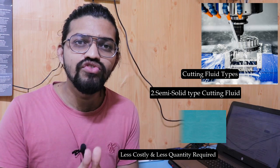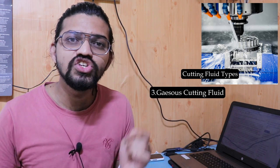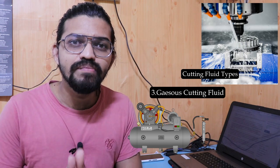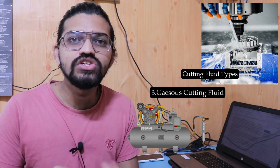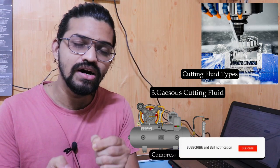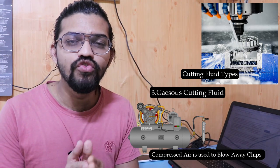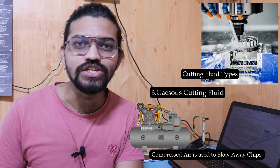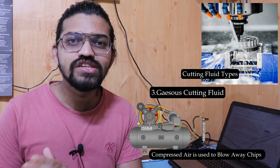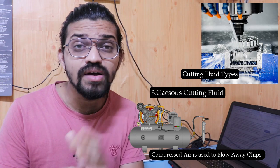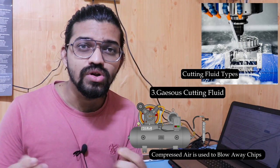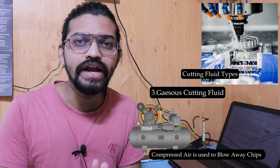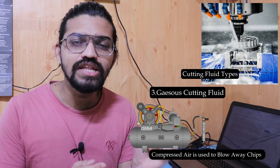The next type is air — the cheapest type of cutting fluid. Compressed air is easily available and is thrown at high velocity and pressure against the machining operation so that chips are blown away. It also acts as a coolant due to air's good thermal conductivity. Compressed air can also be mixed with some liquid to form a mist supply, which produces a good coolant with good thermal conductivity properties.